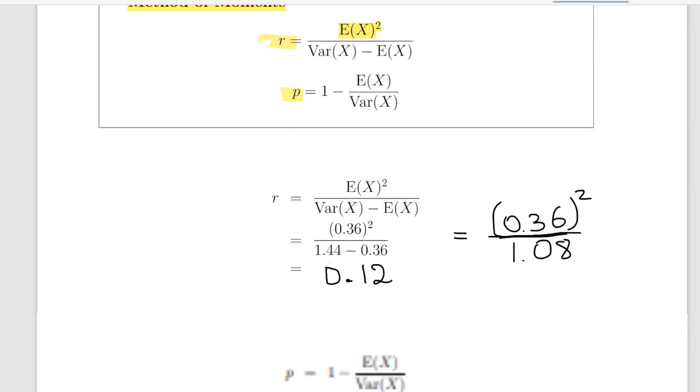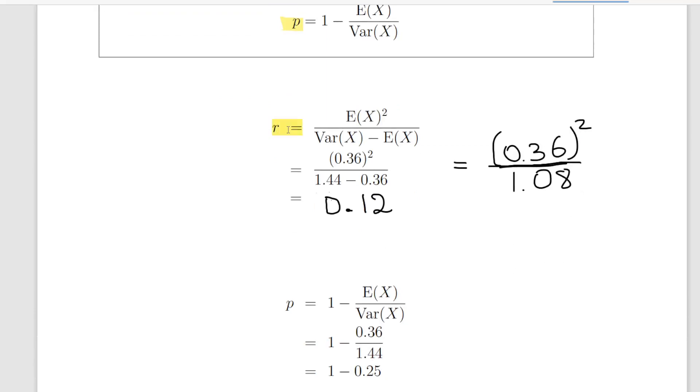I made a mistake here, so I just corrected it. In the first case, what we're going to do is calculate r. That's the expected value of X squared, divided by the variance of X minus the expected value of X. So that is 0.36 squared, divided by 1.44 minus 0.36.